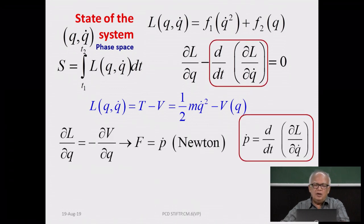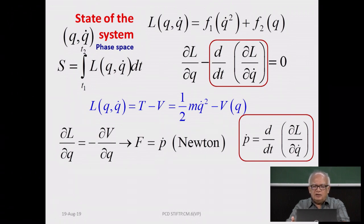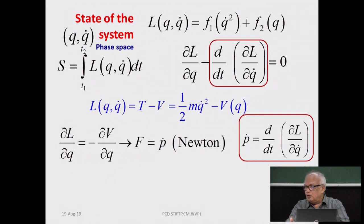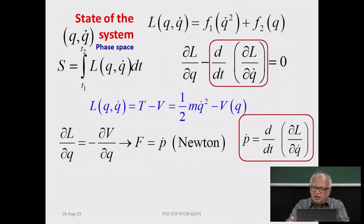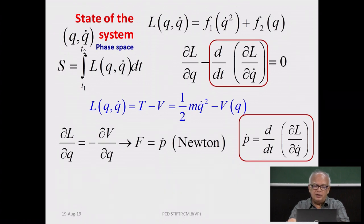When you take the partial derivative of L with respect to q, you get the rate of change of momentum — which also equals the time derivative of the partial derivative of L with respect to velocity, now called the generalized velocity. The partial derivative of the Lagrangian with respect to q-dot is the generalized momentum. We use the formal vocabulary of generalized coordinates, generalized velocity, and generalized momentum in this formalism.